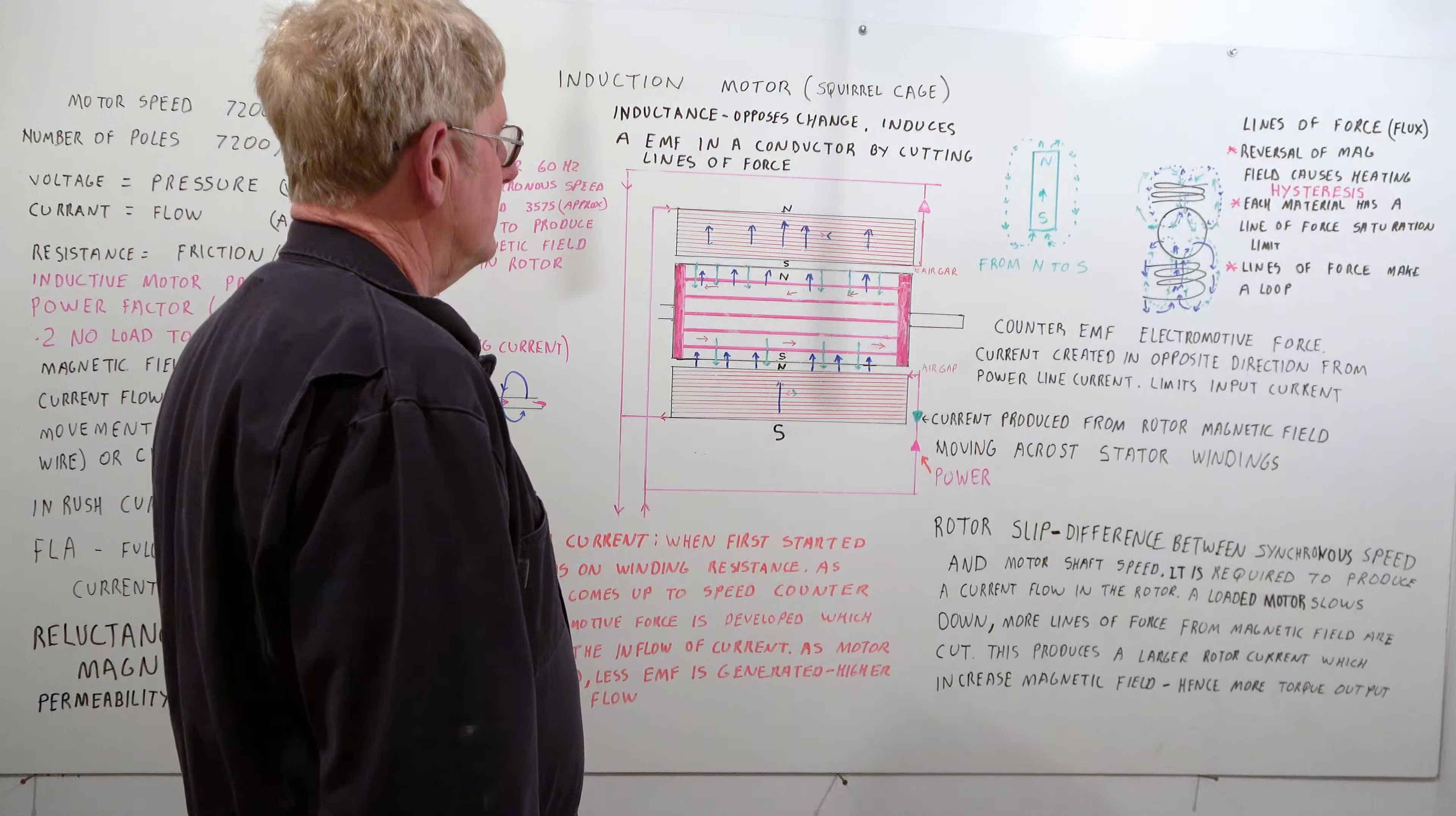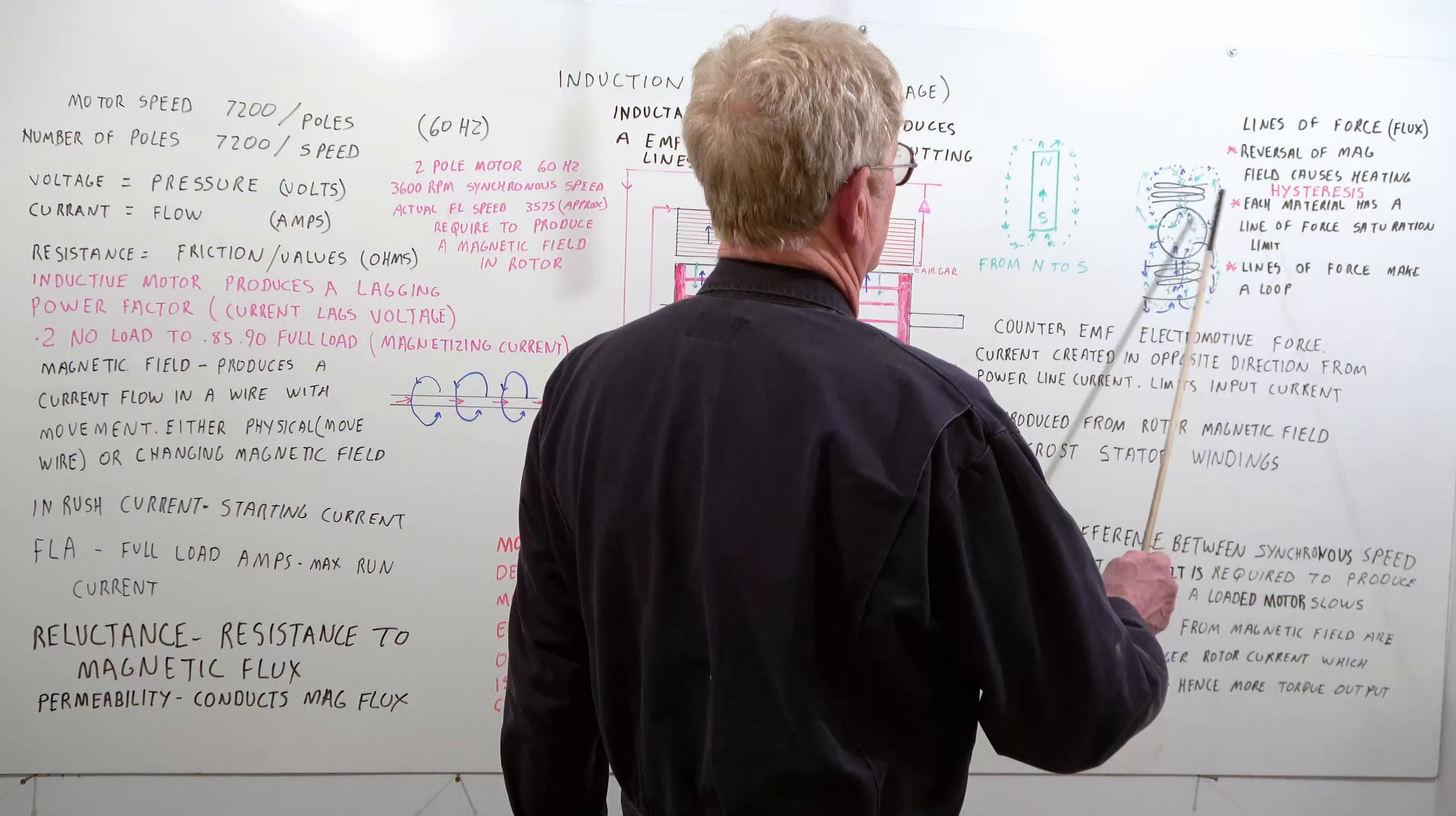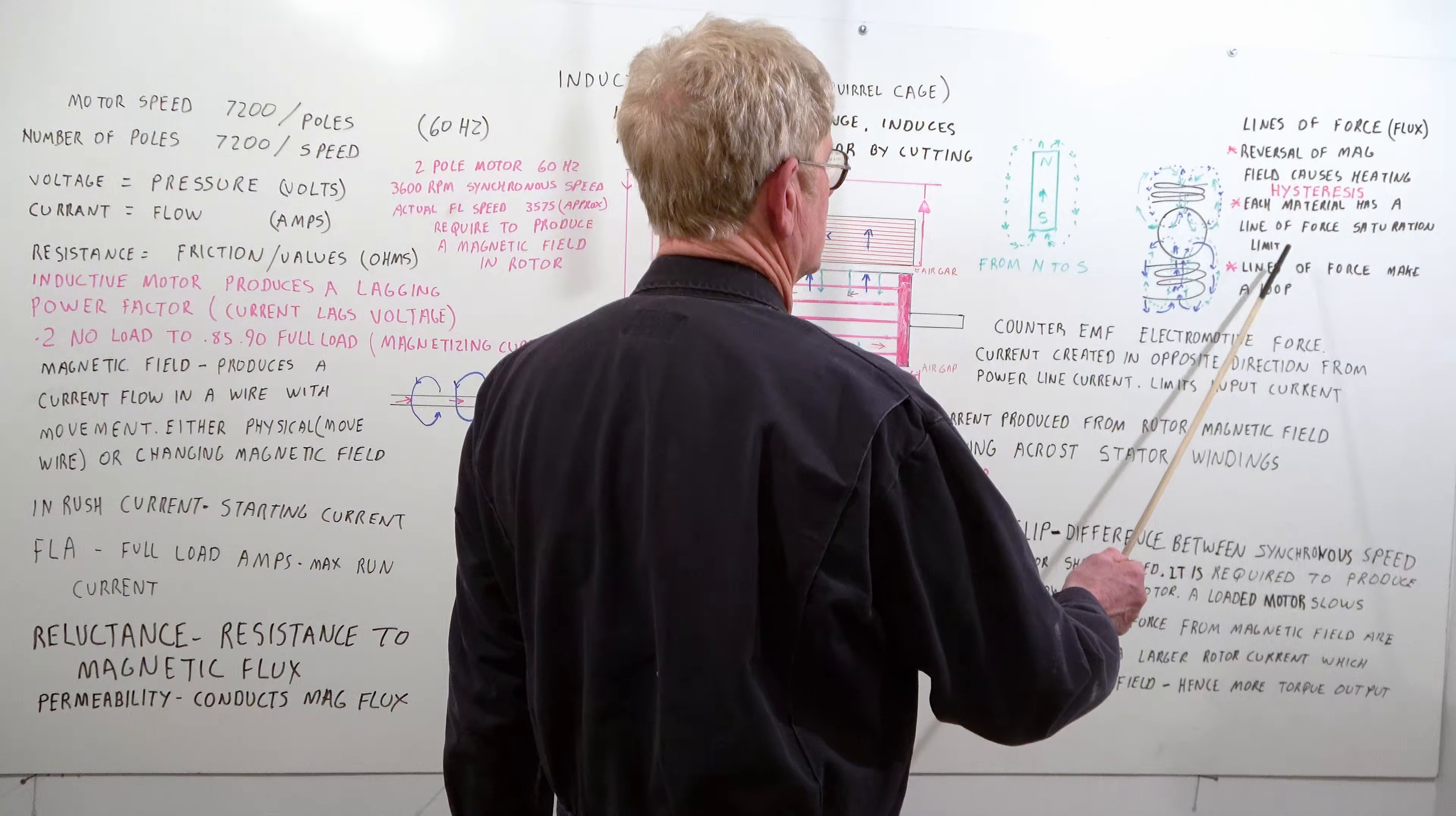In case of the magnetic field, magnets go from north to south. They form lines of force. These like to go through a permeable material like iron. They'll also go through air. Lines of force flux. Reversal of the magnetic field causes heating, hysteresis. So as this magnetic field changes, there's opposition to change. It creates friction in the iron basically and creates heat. Each material has a lines of force saturation limit. This is really important on transformers and generators.